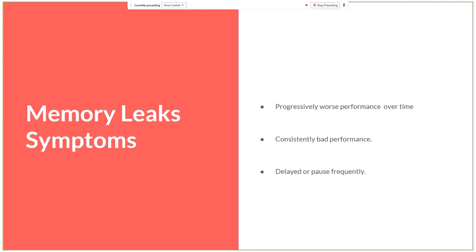The third symptom is when we make some action like clicking a button or opening a pop-up window, and the page just pauses for a couple of seconds before showing the result of the action. This is actually the most common way to see that something bad is happening with the memory of the application — it's a big red alarm to check if there are some leaking variables.